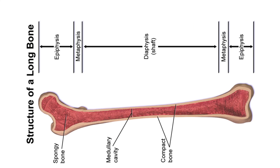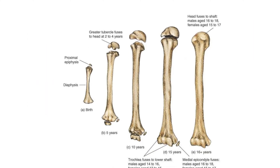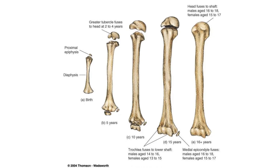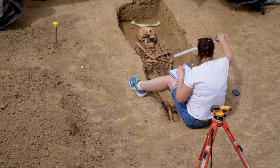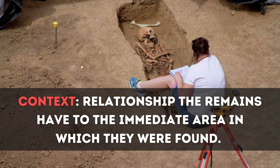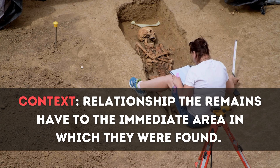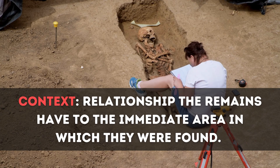One method used to determine age is observing the epiphyses, which are the ends of the long bones. In children and adolescents, the epiphyses are unfused. As individuals grow, these ends fuse to the bone shaft, offering clues about their age at death.